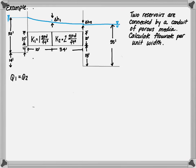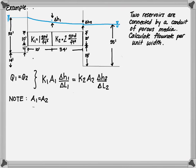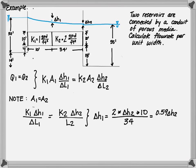First, we know that the flow moving through media one is equal to the flow through media two — conservation of mass. So K1·A1·(delta H1 / delta L1) equals K2·A2·(delta H2 / delta L2). Our cross-sectional area is constant, so A1 equals A2. Setting them equal and solving, delta H1 equals 2 times delta H2 times 10 divided by 34, which gives 0.59·delta H2.